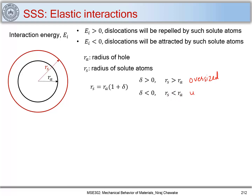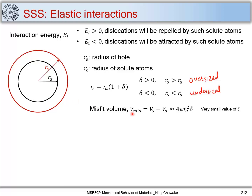When δ is less than zero, that is rS is less than rA, the solute atom is undersized. When we try to put this solute atom into the solvent — which has this hole, the position available for the solute atom — there will be some misfit volume. That misfit volume is Vs minus Va, which comes out to be 4π·rA²·δ, where rA is the radius of the hole and δ is very small.